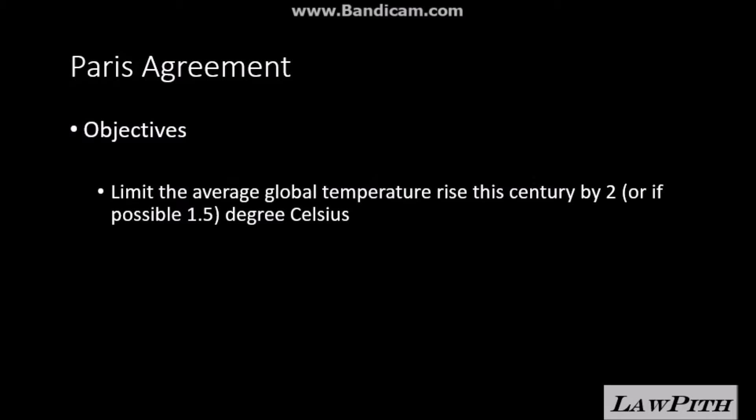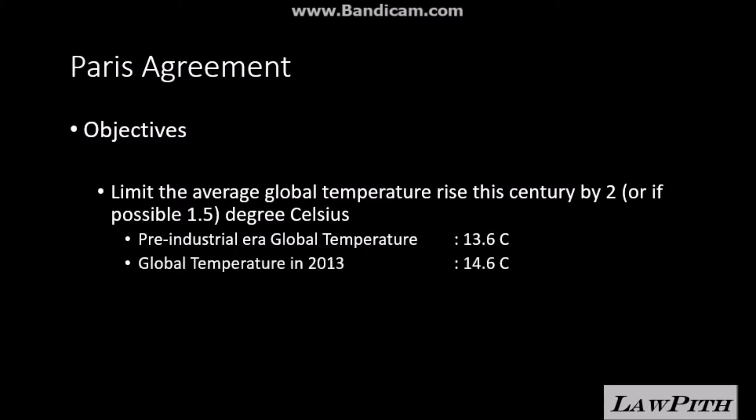In order to understand this objective, please have a look at the following data. Our average global temperature during the pre-industrial era was 13.6 degrees Celsius. The time period I refer to when I use the word pre-industrial era is between the 1850s to 1900s, or in other words the 18th century. So our global temperature during the 18th century was 13.6 degrees Celsius. This global temperature has increased by 1 degree Celsius and has reached 14.6 degrees Celsius in the year 2013.